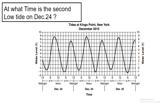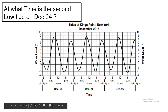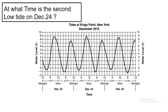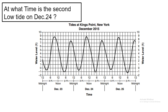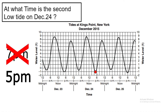Here's a quick question: at what time is the second low tide on December 24th? Here's December 24th. The first low tide would be here, because this is the first dip within December 24th. The second low tide — you go 12, then 1, 2, 3, 4, and in between 4 and 6 is 5. So it should be 5 PM — that was my mistake. 5 PM.